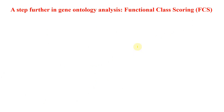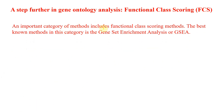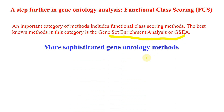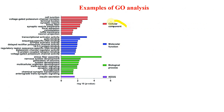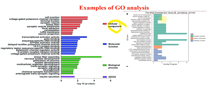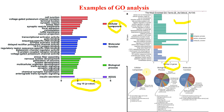A step further in gene ontology analysis, you will see an important category of methods including functional class scoring. One of the best methods in this category is gene set enrichment analysis (GSEA), which I will cover in a separate video. There are also more sophisticated gene ontology methods such as ELIM and weight. Here I have shown a few different ways to represent GO term analysis. The most common is through a bar graph; there is also representation combining the number of genes with p-values shown as negative log10 p-values, and some papers represent GO term analysis using bubble or lollipop charts.